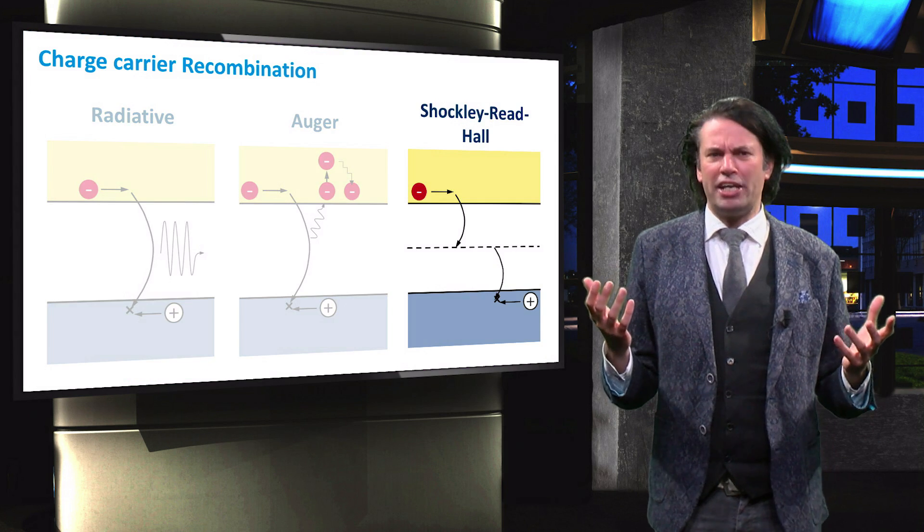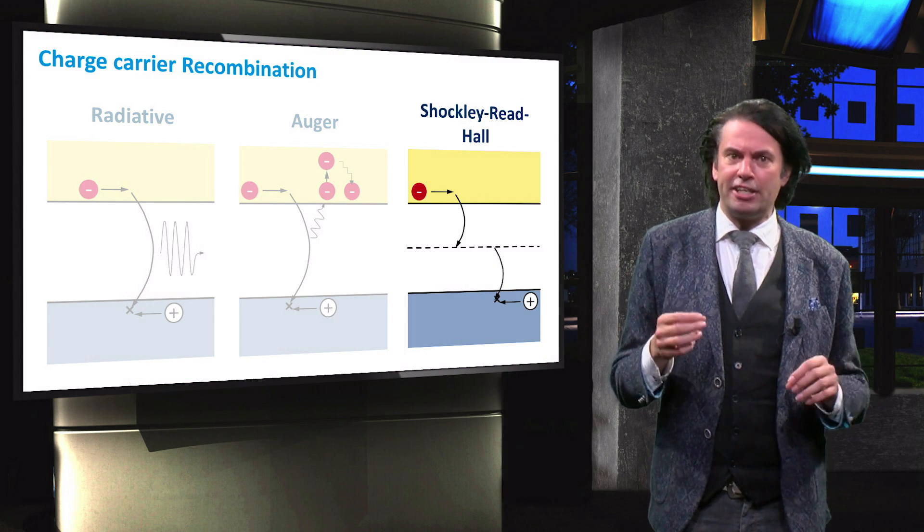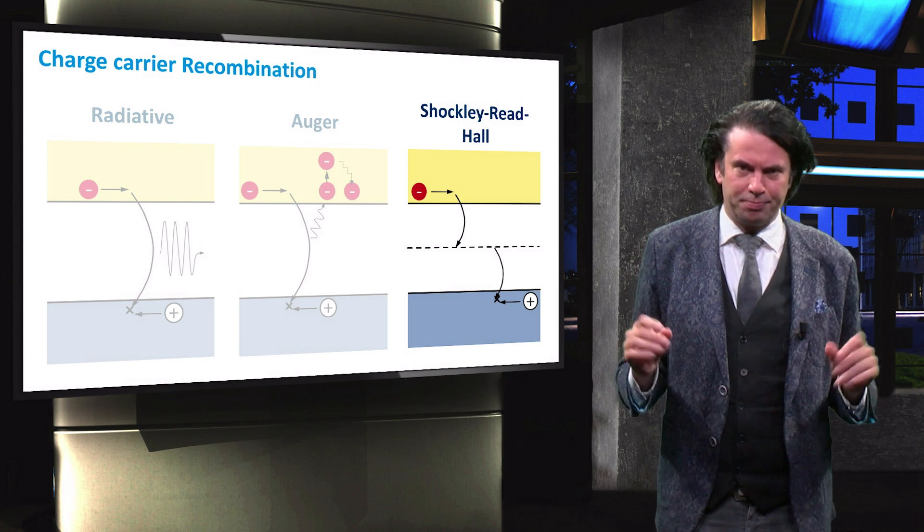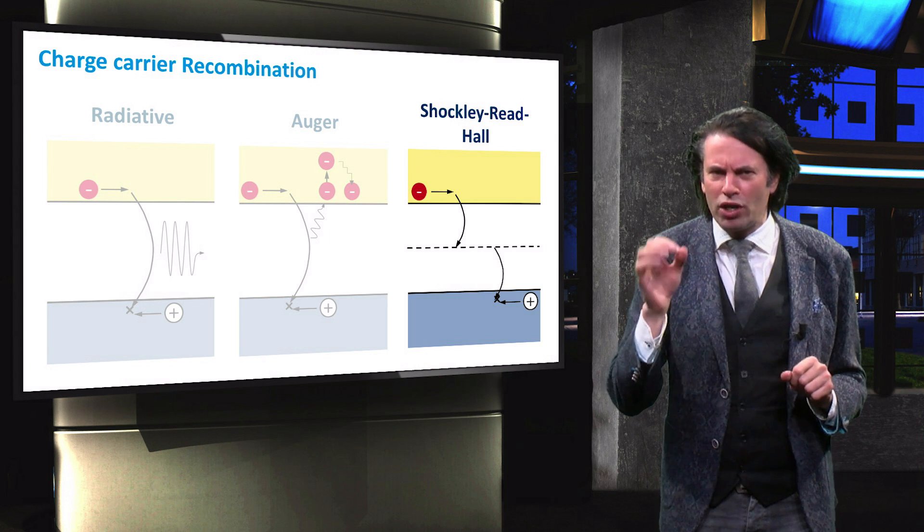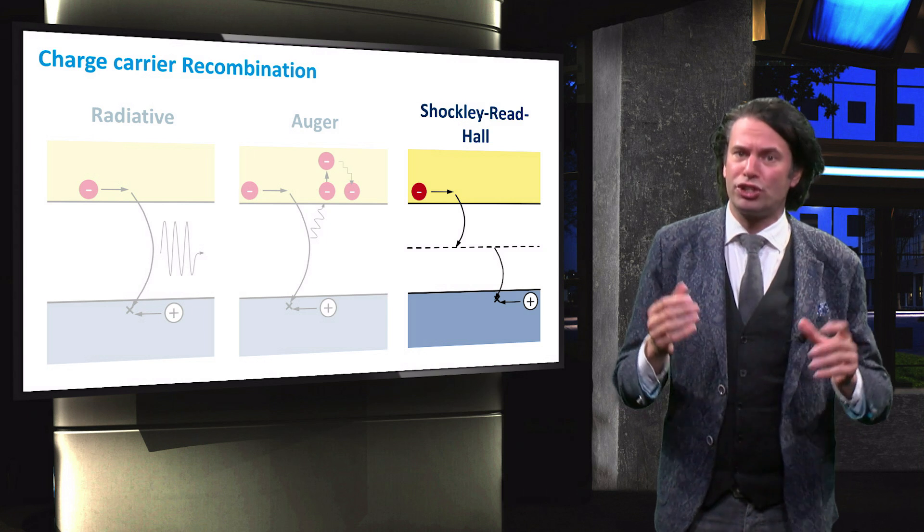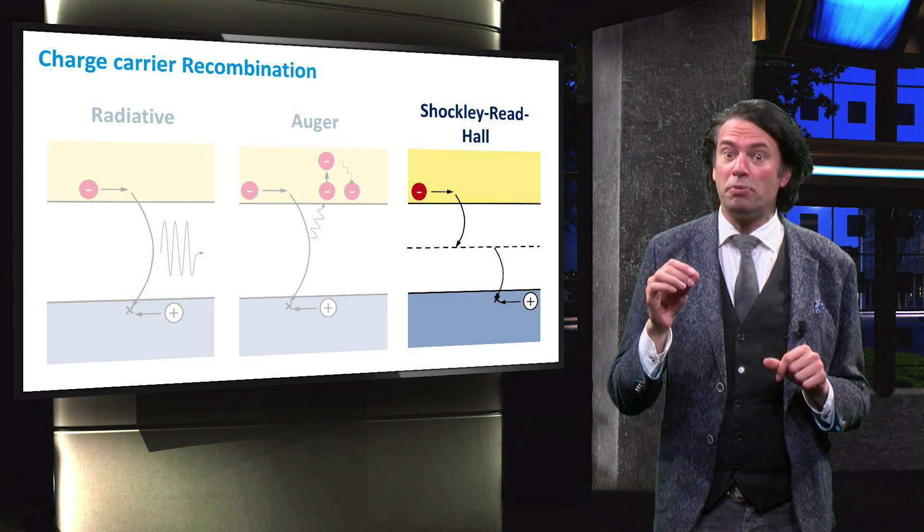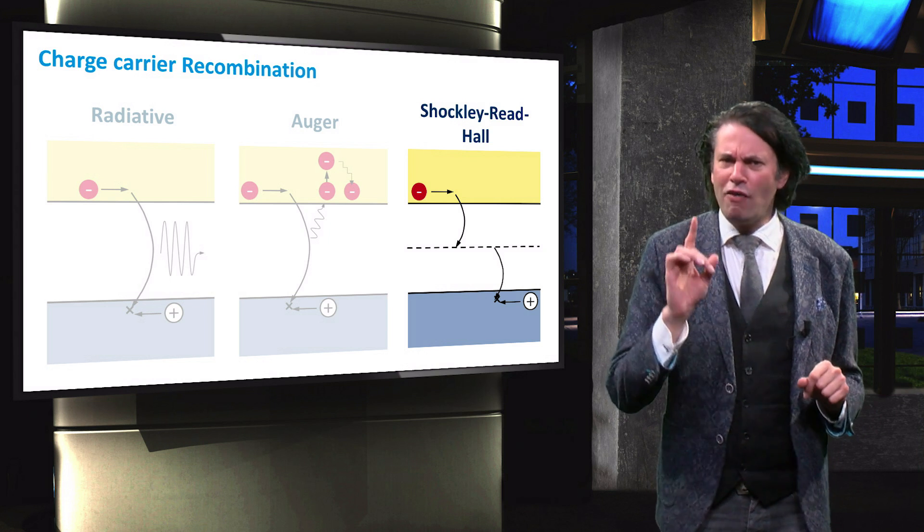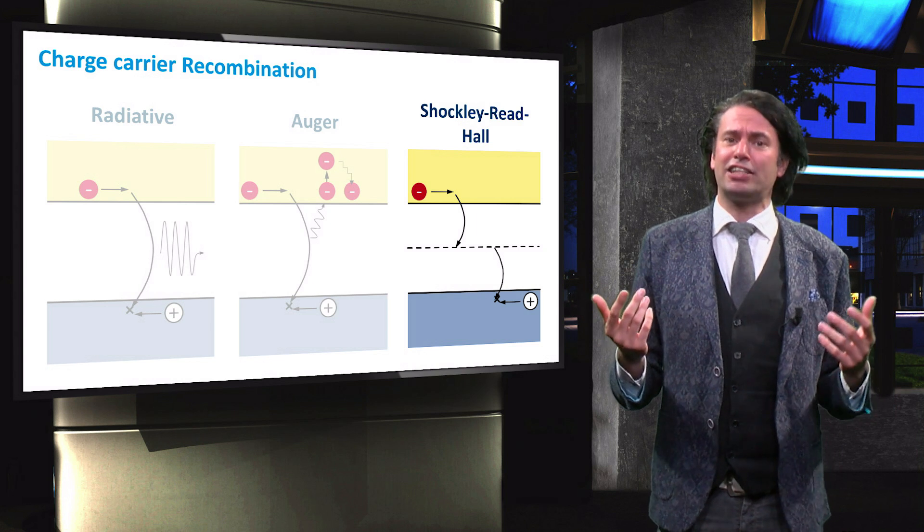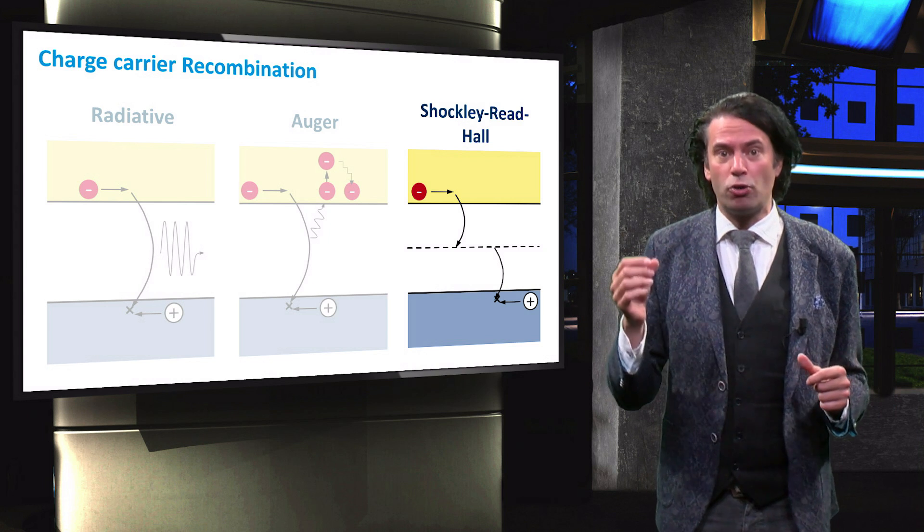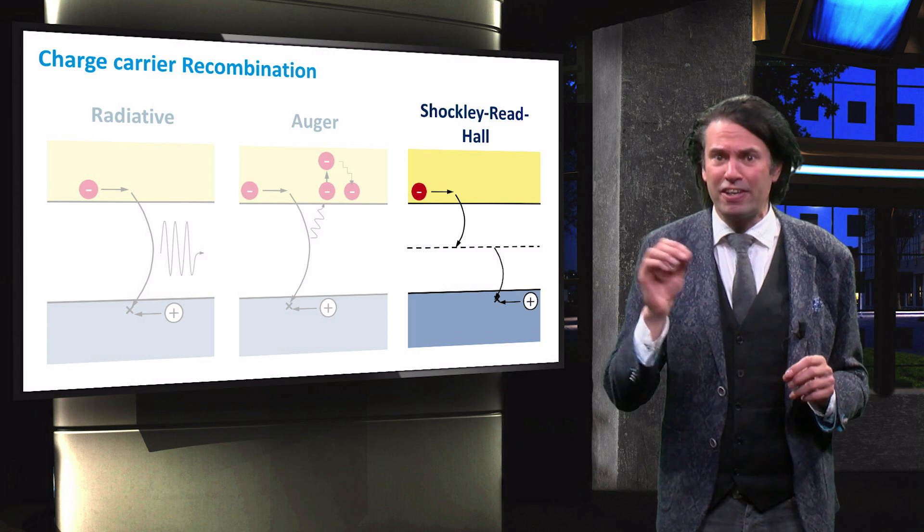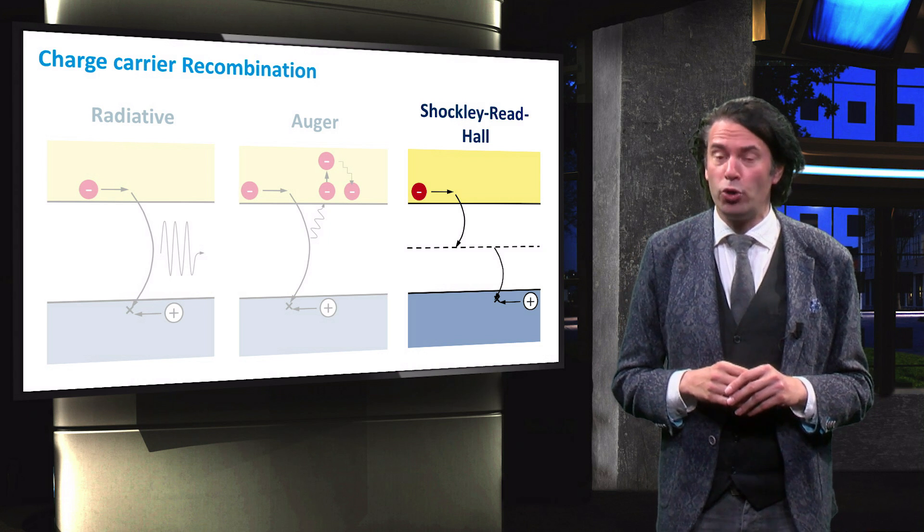Shockley-Read-Hall recombination is caused by defects and is present in any material. In a good quality single junction gallium arsenide solar cell, the Shockley-Read-Hall recombination can be ignored. However, as you will learn in the next videos, Shockley-Read-Hall recombination might become significant in certain types of multi-junction devices.